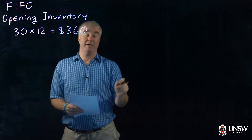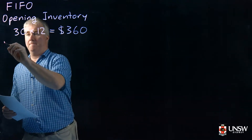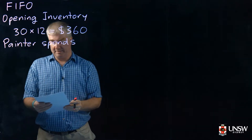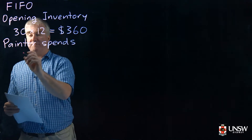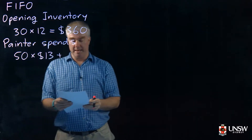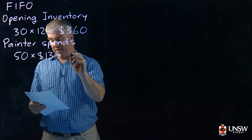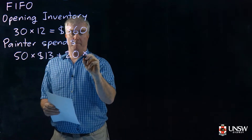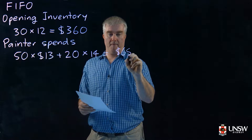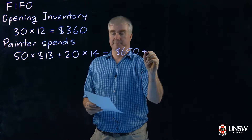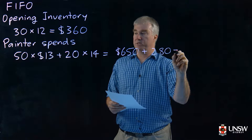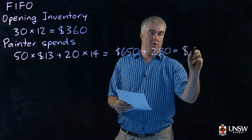Now we need to work out how much money the painter spent. The painter spent $13 for 50 tins, plus later he spent $14 for another 20 tins, which gives us $650 plus $280, a total of $930.